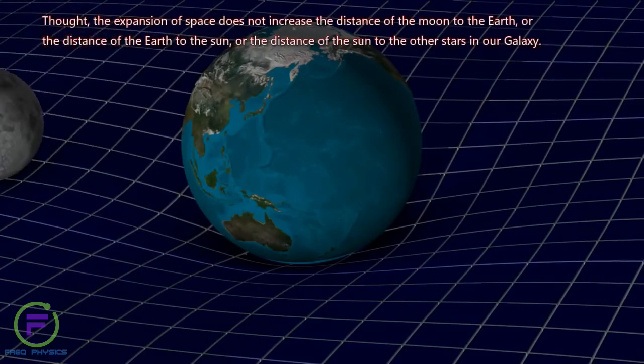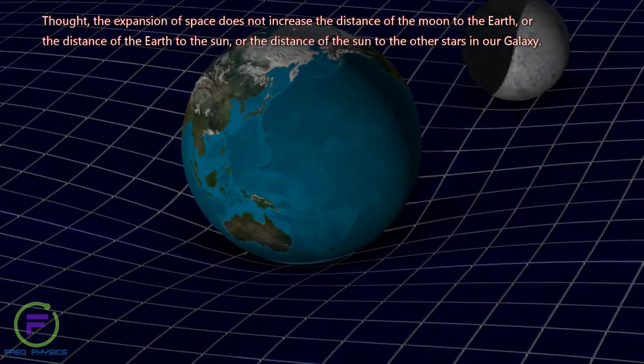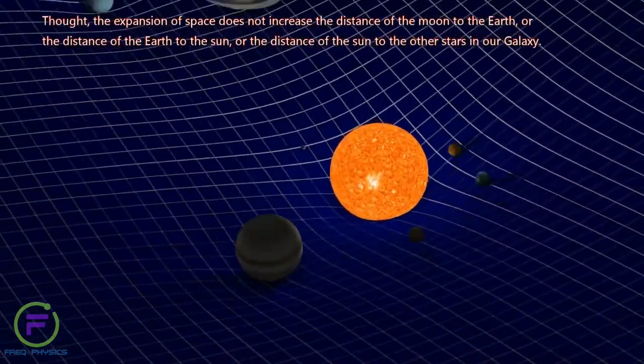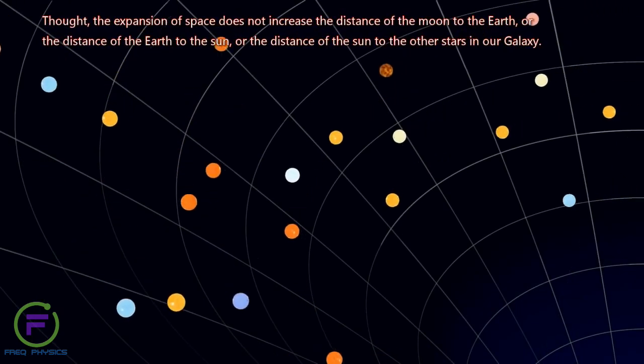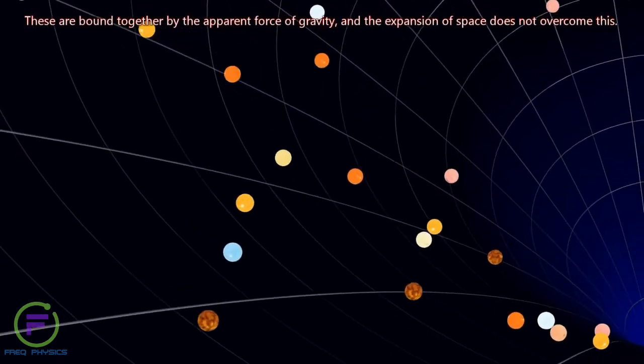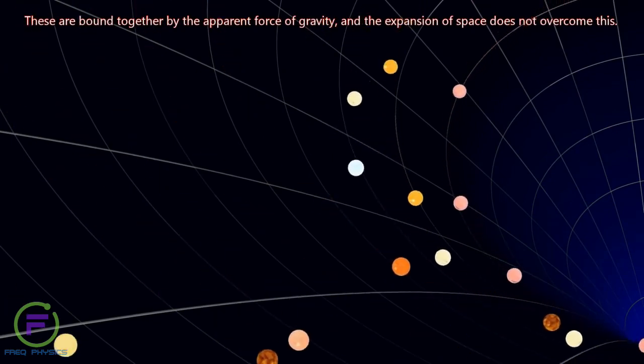The expansion of space does not increase the distance of the Moon to the Earth, or the distance of the Earth to the Sun, or the distance of the Sun to the other stars in our galaxy. These are bound together by the apparent force of gravity, and the expansion of space does not overcome this.